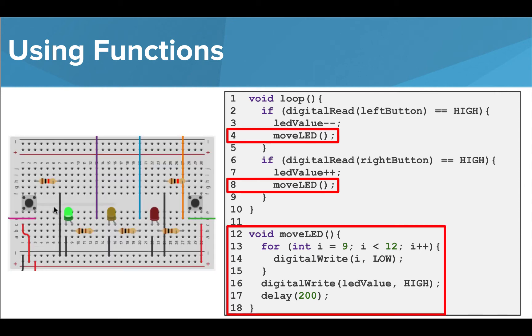So when this program runs, each time the left button is pressed, the lit LED moves to the left, because the variable LED value has been decreased by one before we call the moveLED function.